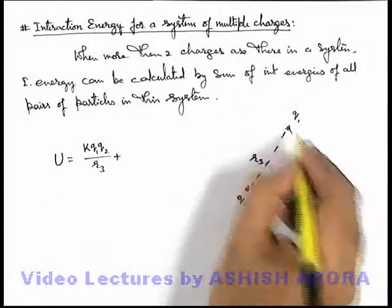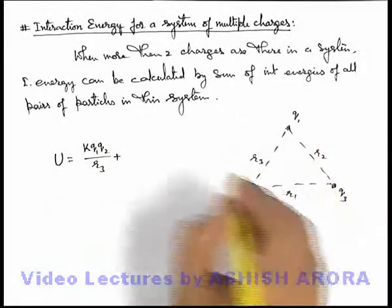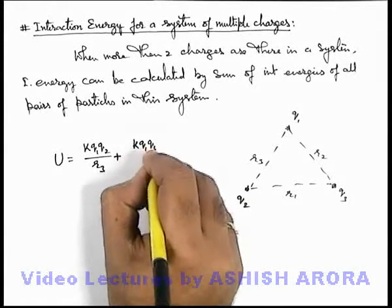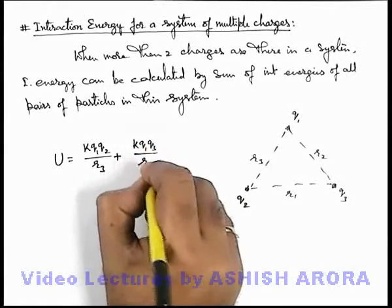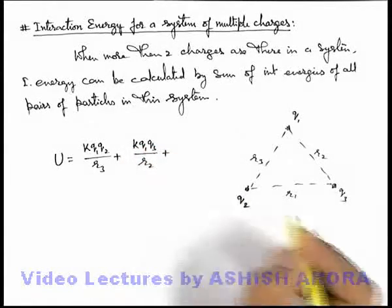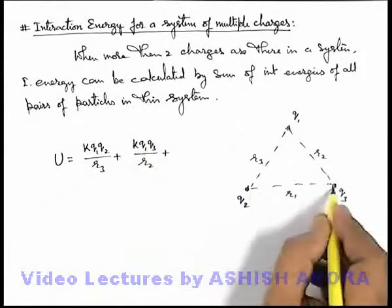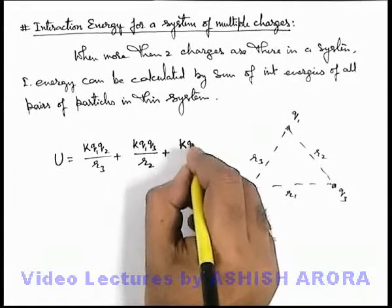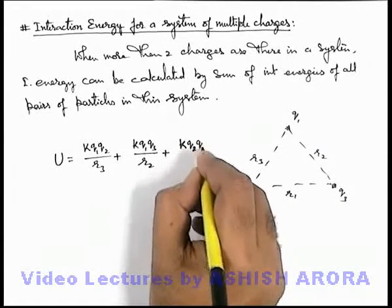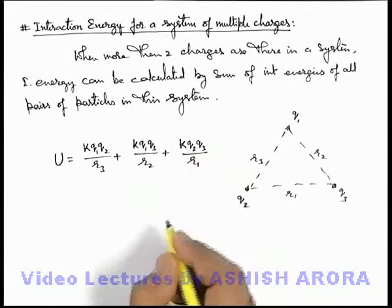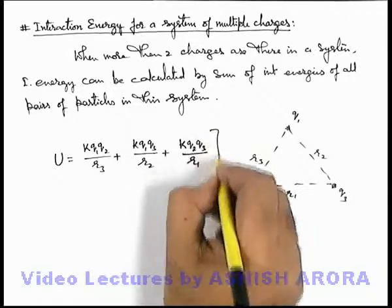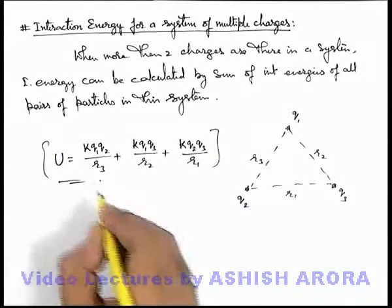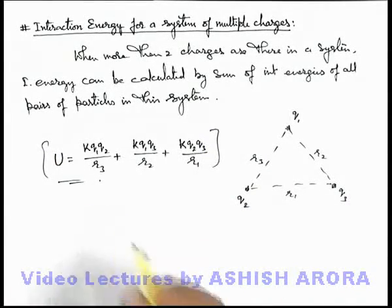Plus, due to the pair of q1 and q3, it will be k·q2·q3 / r1. This is the way how we calculate the total interaction energy of a system of charged particles.